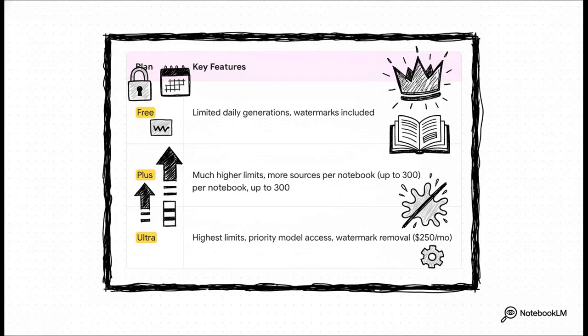For heavier use, the plus and pro plans give you way higher limits. And then there's the ultra plan for teams and real power users. It's got the highest limits, priority access, and most importantly, no watermarks.